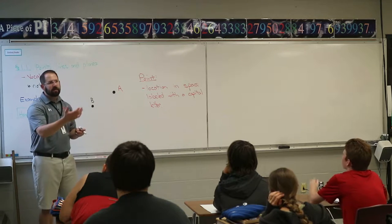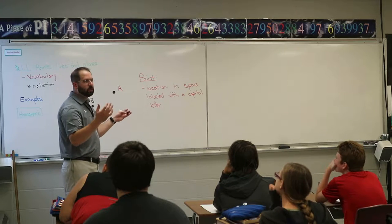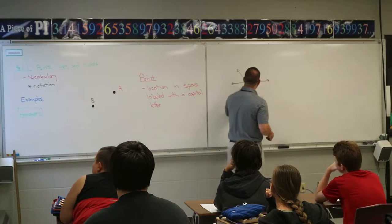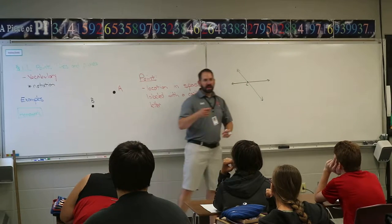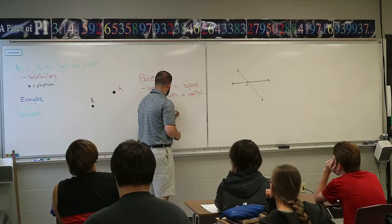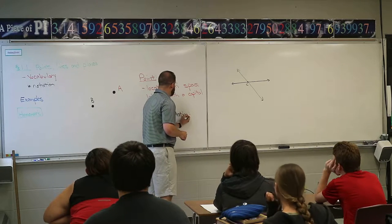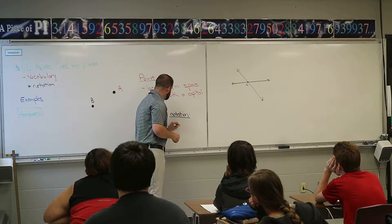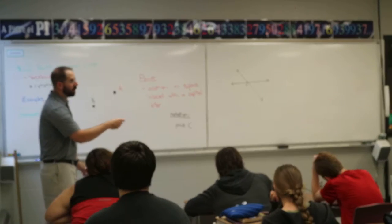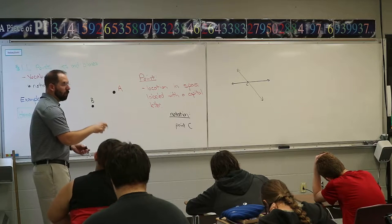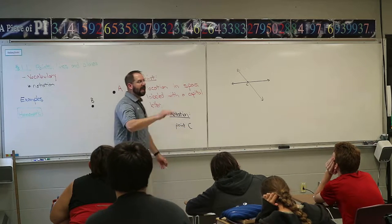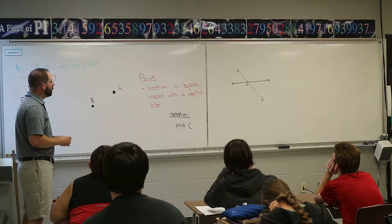For notation: maybe the homework says 'find the point where these two lines intersect.' They cross right at point C. Your answer — the notation — is how you write it. You have to actually write the word 'point' in lowercase, then the capital letter after: 'point C.' If you forget to write the word point and just write C, I count it wrong. That's how picky I am. You've got to write the word point and put the letter after it, because just a letter alone could represent something else.